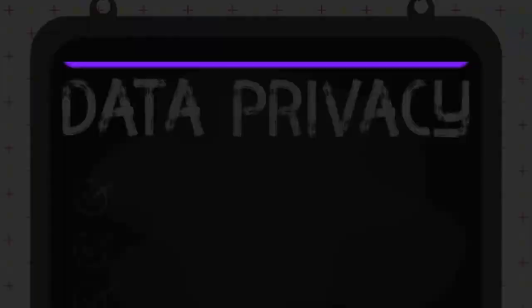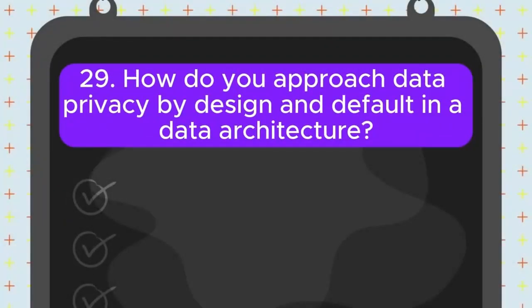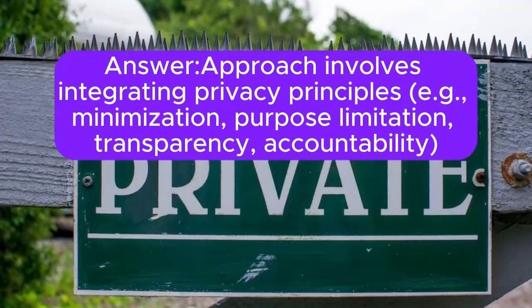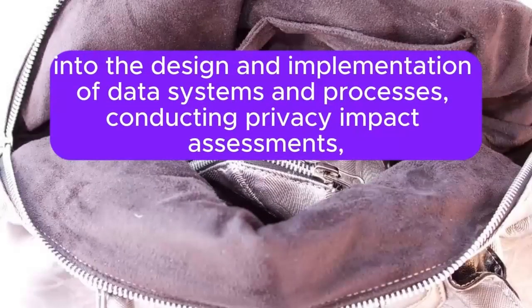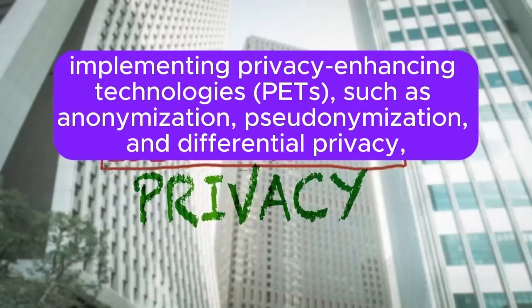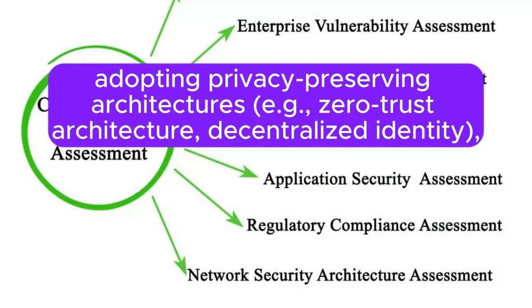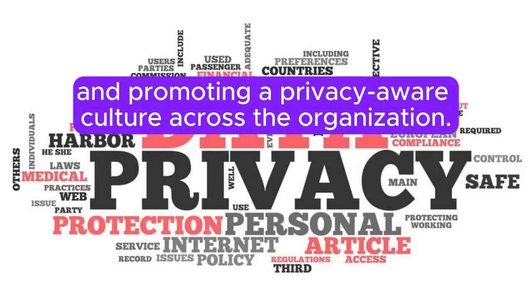Question 29: How do you approach data privacy by design and default in a data architecture? The approach involves integrating privacy principles such as minimization, purpose limitation, transparency, and accountability into the design and implementation of data systems and processes, conducting privacy impact assessments, implementing privacy-enhancing technologies (PETs) such as anonymization, pseudonymization, and differential privacy, adopting privacy-preserving architectures such as zero trust architecture and decentralized identity, and promoting a privacy-aware culture across the organization.